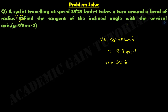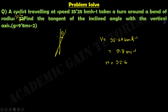We have to find the tangent of the inclined angle with the vertical axis. When the cyclist takes a turn, he will move from the vertical angle to some inclined angle, and we have to find out the tangent of this inclined angle with the vertical axis.